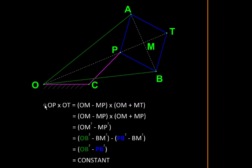So the product OP into OT is constant. Let us see that in our figure. So we have a fixed point O from which there is this ray OPT emanating, and the distance of P and T from O get multiplied to give us a constant.